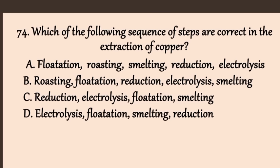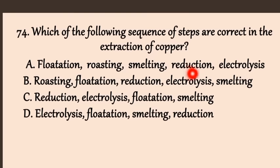Question 74: Which sequence of steps is correct in the extraction of copper? A) flotation → roasting → smelting → reduction → electrolysis. Copper exists as a sulfide ore, so froth flotation is first, then roasting converts sulfide to oxide, smelting follows, then reduction, and finally electrolysis for purification. The answer is A.